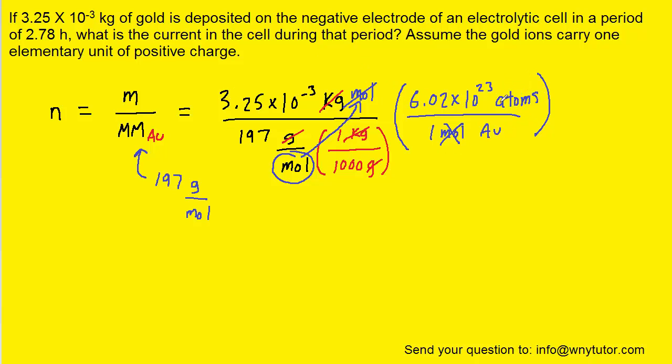So we'll pick up our calculators and process this computation. And when we do that, we get a value of approximately 9.93 times 10 to the 21st atoms of gold. And it turns out that this is the number we need in order to proceed.